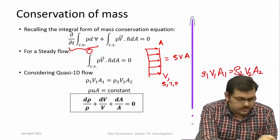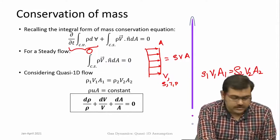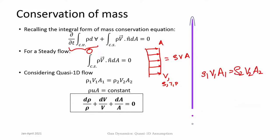v is just one uniform velocity value here. Given rho v A is constant, it can also be written in differential form: d(rho)/rho + dv/v + dA/A = 0. This comes by just differentiating rho v A = constant. So in the integral form it is rho v A is constant, and in differential form d(rho)/rho + dv/v + dA/A = 0.